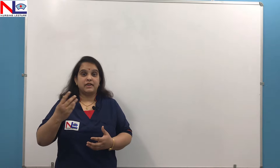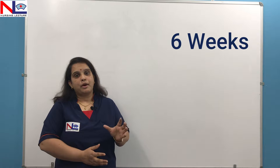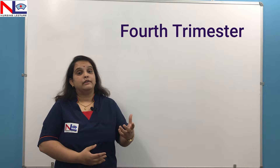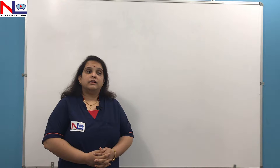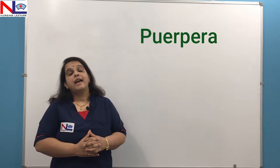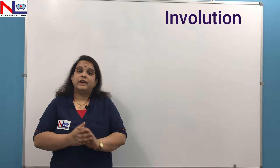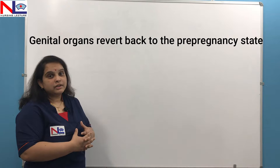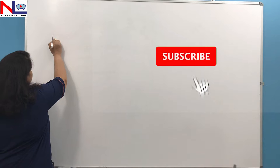Following delivery, all changes revert back to the previous state and it takes six weeks. It lasts for about six weeks on average. Sometimes this period is also referred to as the fourth trimester because there are some changes that take eight to twelve weeks to complete the whole process. The woman who is in this period is called a puerpera. There is one more term: involution, in which the genital tract organs are only reverting back to their pre-pregnant state. In this lecture, we'll discuss which genital organs revert back to the pre-pregnant state.